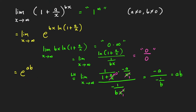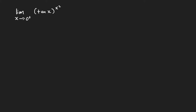Next problem. Let's evaluate this limit as x approaches 0 from the right. As x approaches 0 from the right, tangent x approaches 0, and the exponent x squared also approaches 0. So this has the indeterminate form 0 raised to 0.